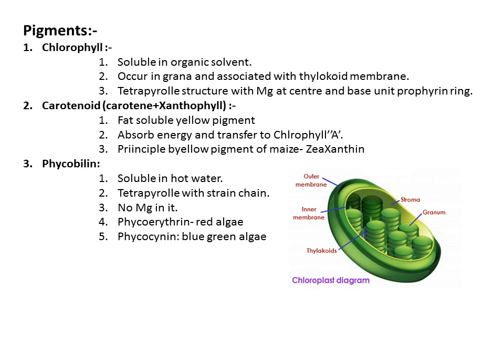The third pigment is phycobilin, which is soluble in hot water and has a tetrapyrrole structure with a straight chain — and unlike chlorophyll, no magnesium is contained in it. There are two phycobilins: phycoerythrin and phycocyanin. Phycoerythrin is found in red algae and its color is red due to phycoerythrin. Phycocyanin is found in blue-green algae.